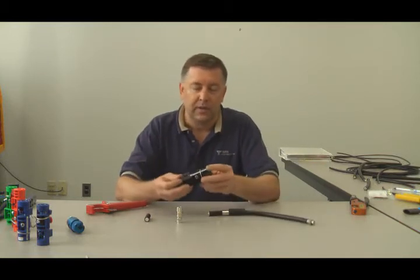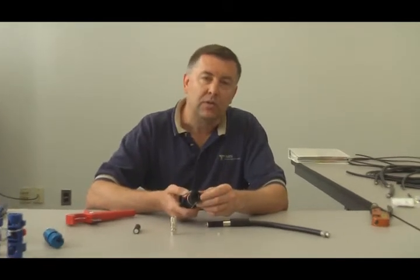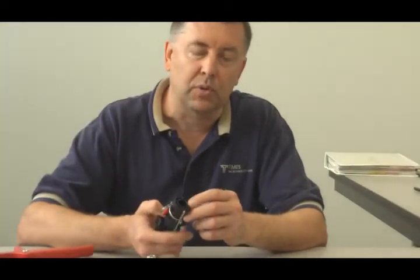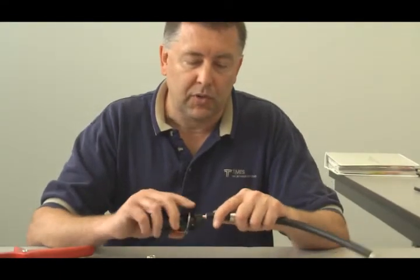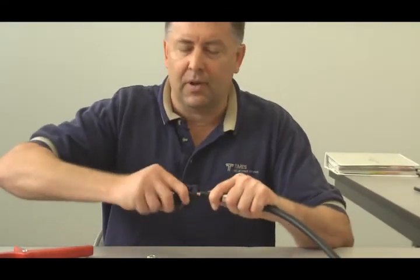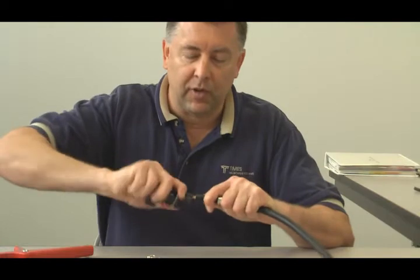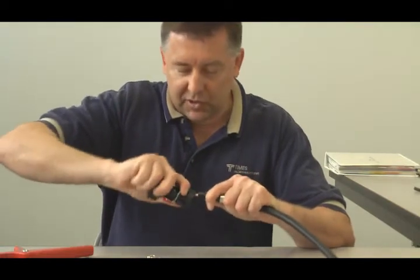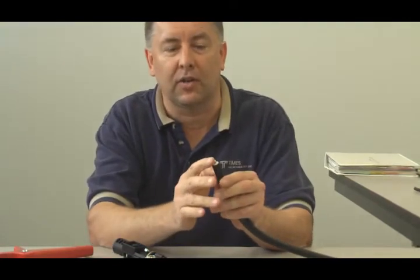At this point, go back to side two of this tool here. On the end of side two, there's a deburr tool. Place the deburr tool over the center of the cable and just half a dozen times back and forth. You'll actually probably see little filings of copper coming off there. Now you've got a nice chamfer on the center contact.